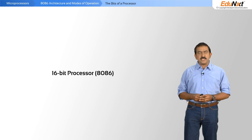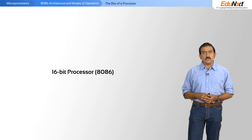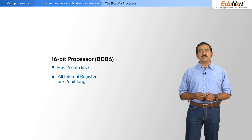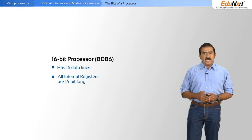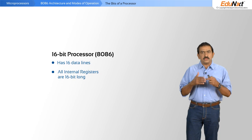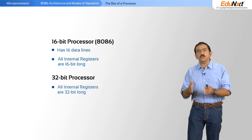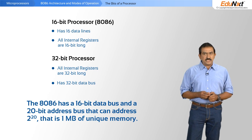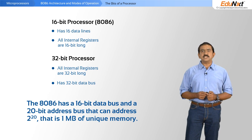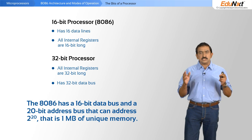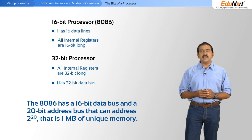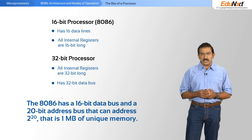The 8086 is a 16-bit processor because it has 16 data lines exposed to the external world and all internal registers are 16 bits long. For a 32-bit processor you would have 32 bits of internal registers and a 32-bit data bus. In the case of the 8086, while the data bus is 16 bits, the address is 20 bits wide, allowing you to address up to 1 megabyte of RAM or ROM. 2 to the power 20 is 1 megabyte.